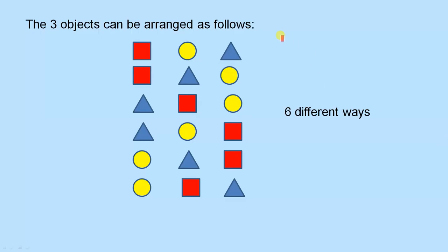The 3 objects can be arranged as follows. That is the arrangement on the previous slide. There's the next arrangement. We'll keep the square first, and then we just swap those 2 around. Then we put the triangle first, and we put those 2. Keep the triangle first, and swap those 2 around.